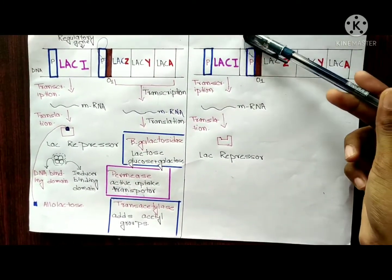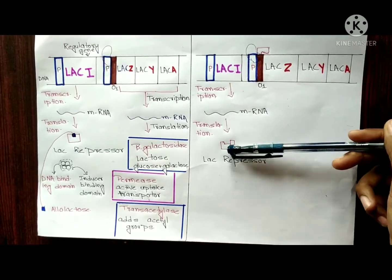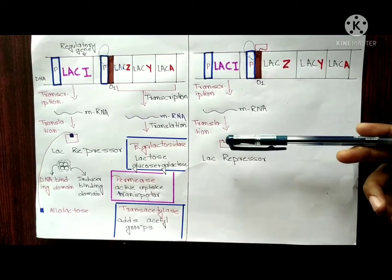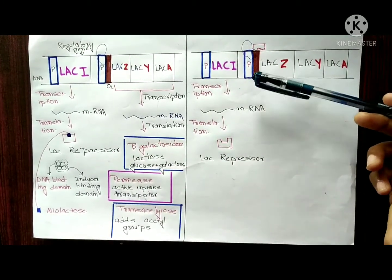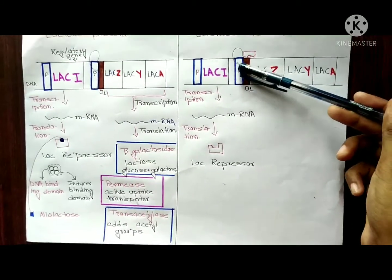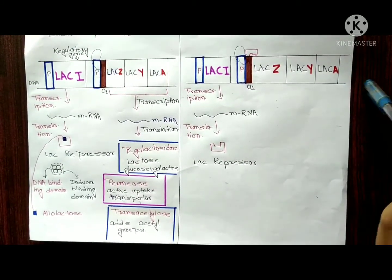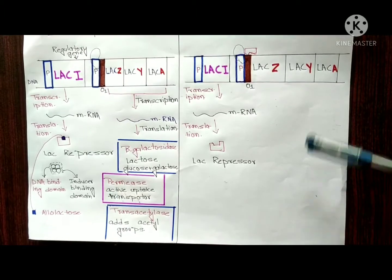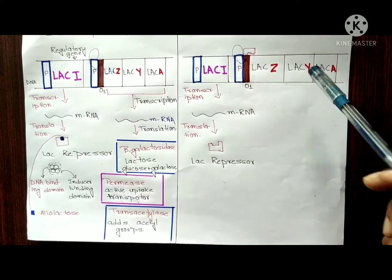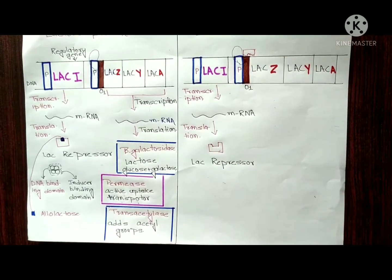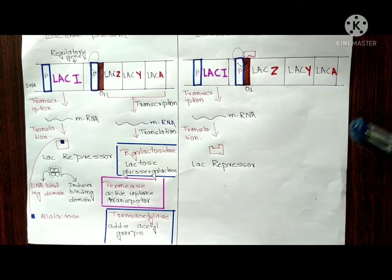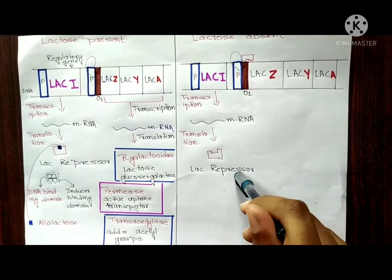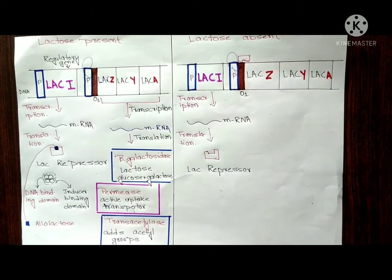When lactose is absent, the lac repressor binds to the operator, blocking RNA polymerase and stopping transcription. This is called negative regulation because the repressor protein is actively blocking the transcription process.